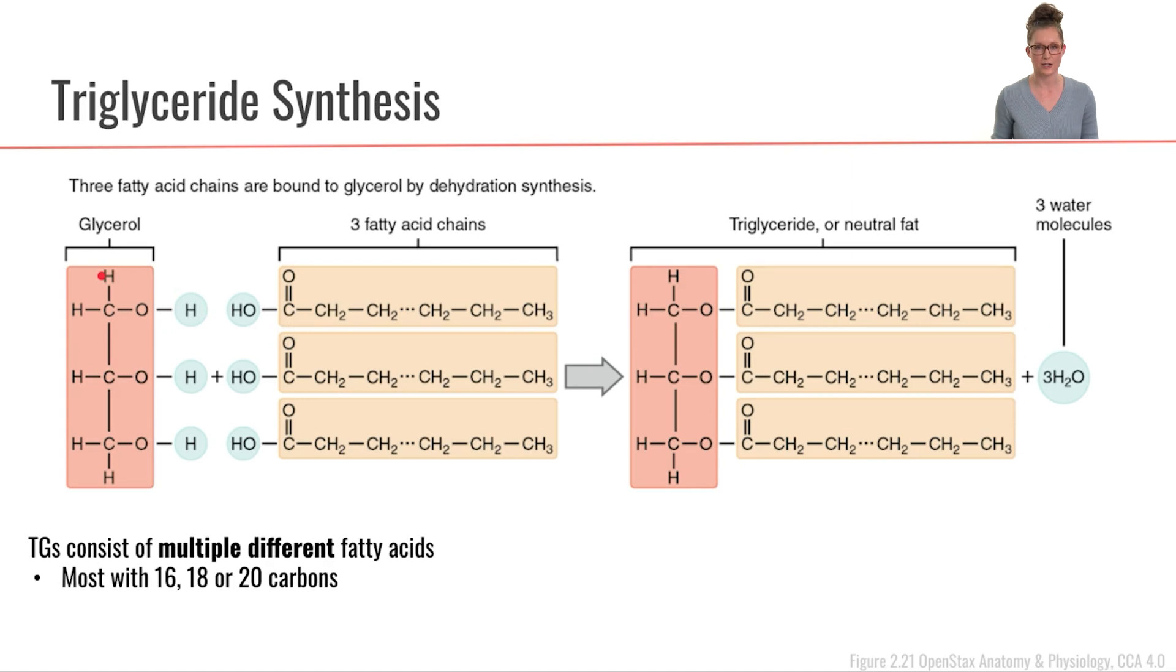Now as I had shown in an image earlier, we know that these triglycerides can be kind of a mix and match between different types of fatty acids. Typically these fatty acids are going to be longer chain fatty acids, 16 to 18 to 20 carbons long. So that's kind of what your typical triglyceride would be made of.